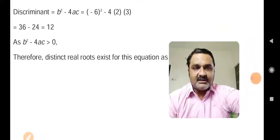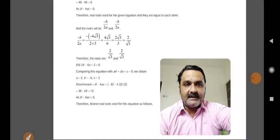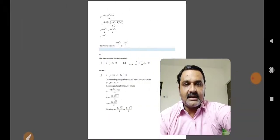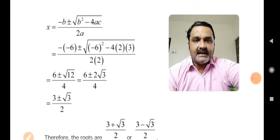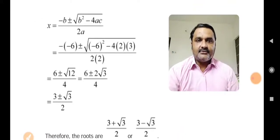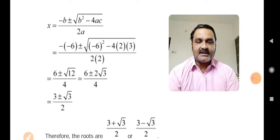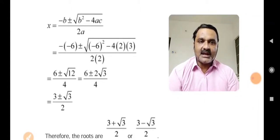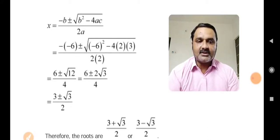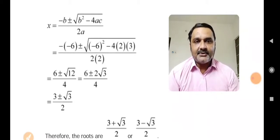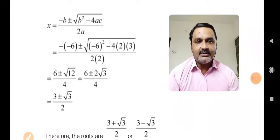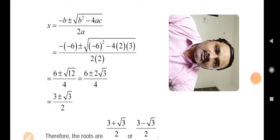Since discriminant equals 0, the two equal roots are found using minus b upon 2a, giving 2 upon under root 3. For the third equation, discriminant comes to 12, which is greater than 0, giving two distinct real roots: 3 plus under root 3 upon 2 and 3 minus under root 3 upon 2.